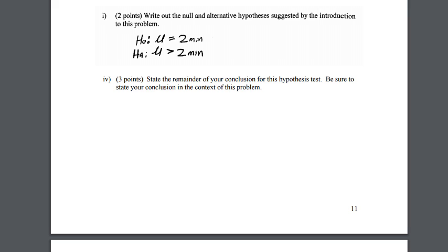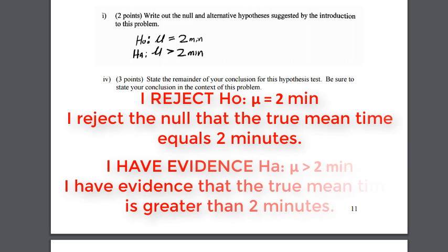When we state our decision we can say I reject the null that the true time it takes to answer the initial questions is equal to two minutes. I have evidence that the true mean time it takes to answer the questions is greater than two minutes.